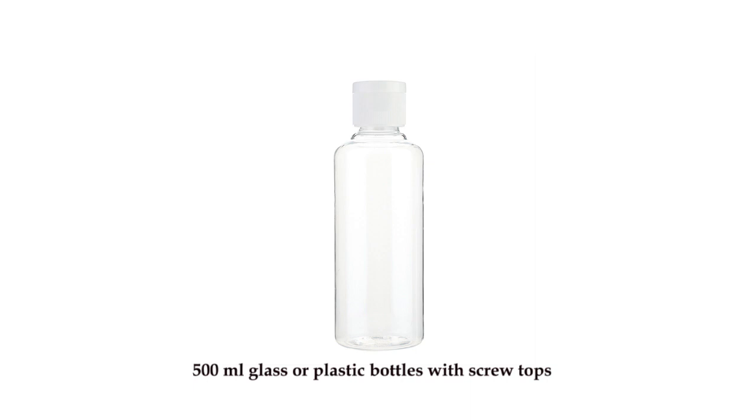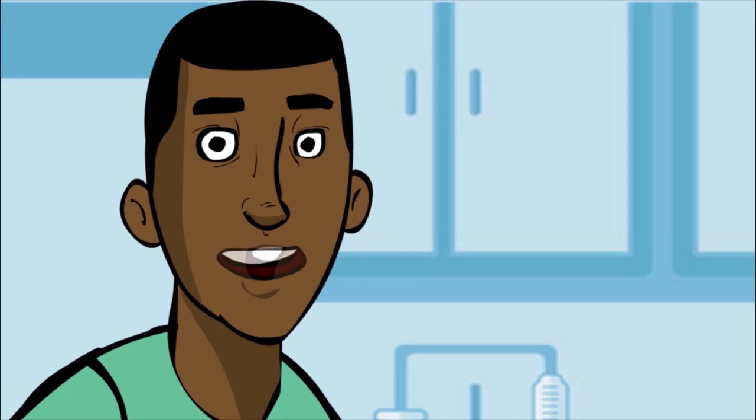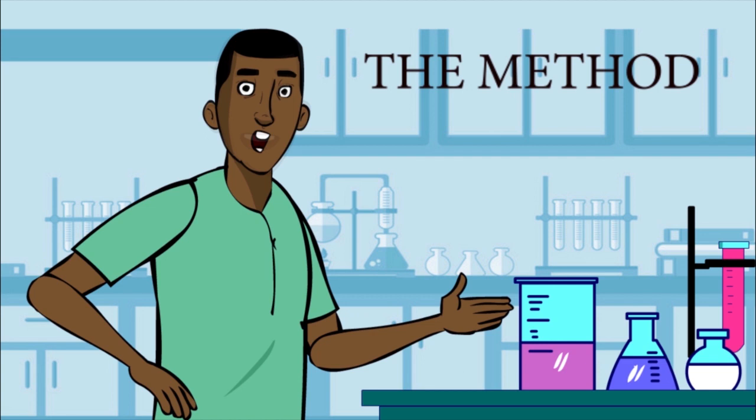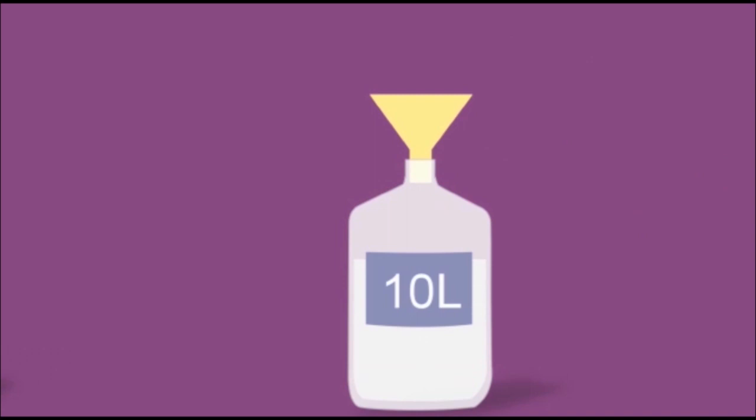The method: measure all the ingredients. Pour the alcohol into the large container. If you are going to be using the same alcohol types and containers for production, you could mark the container with the level of alcohol volume needed for ease of measuring.